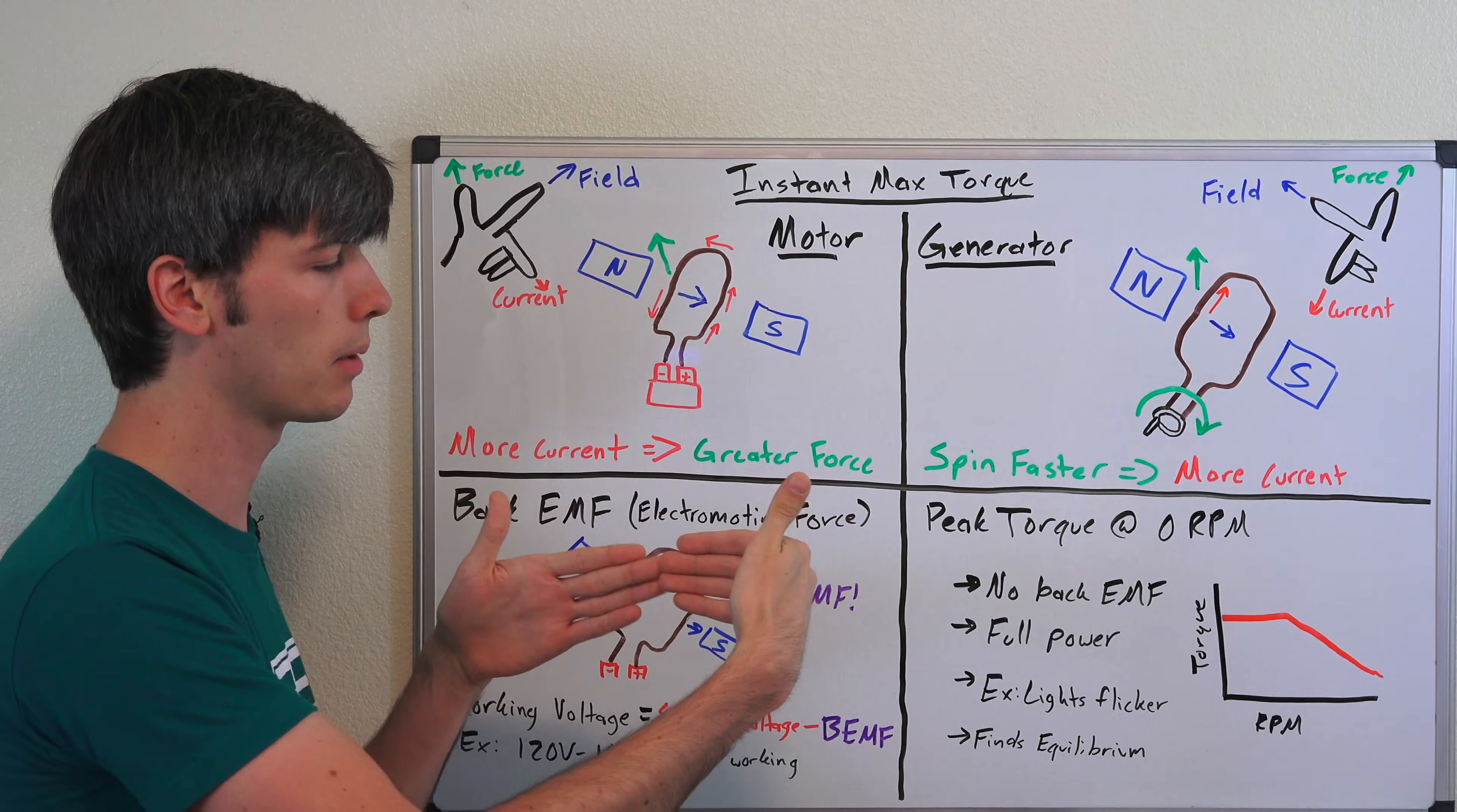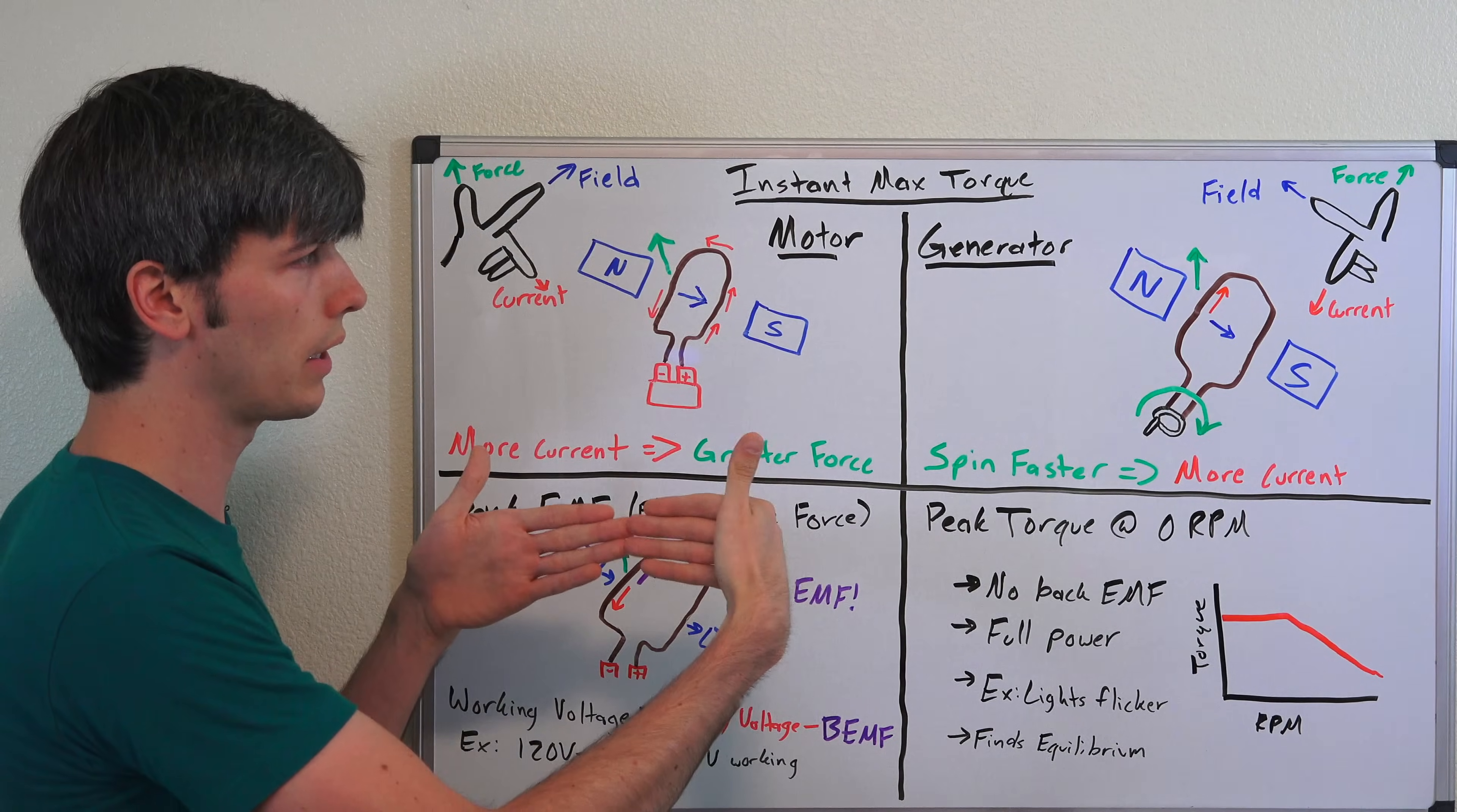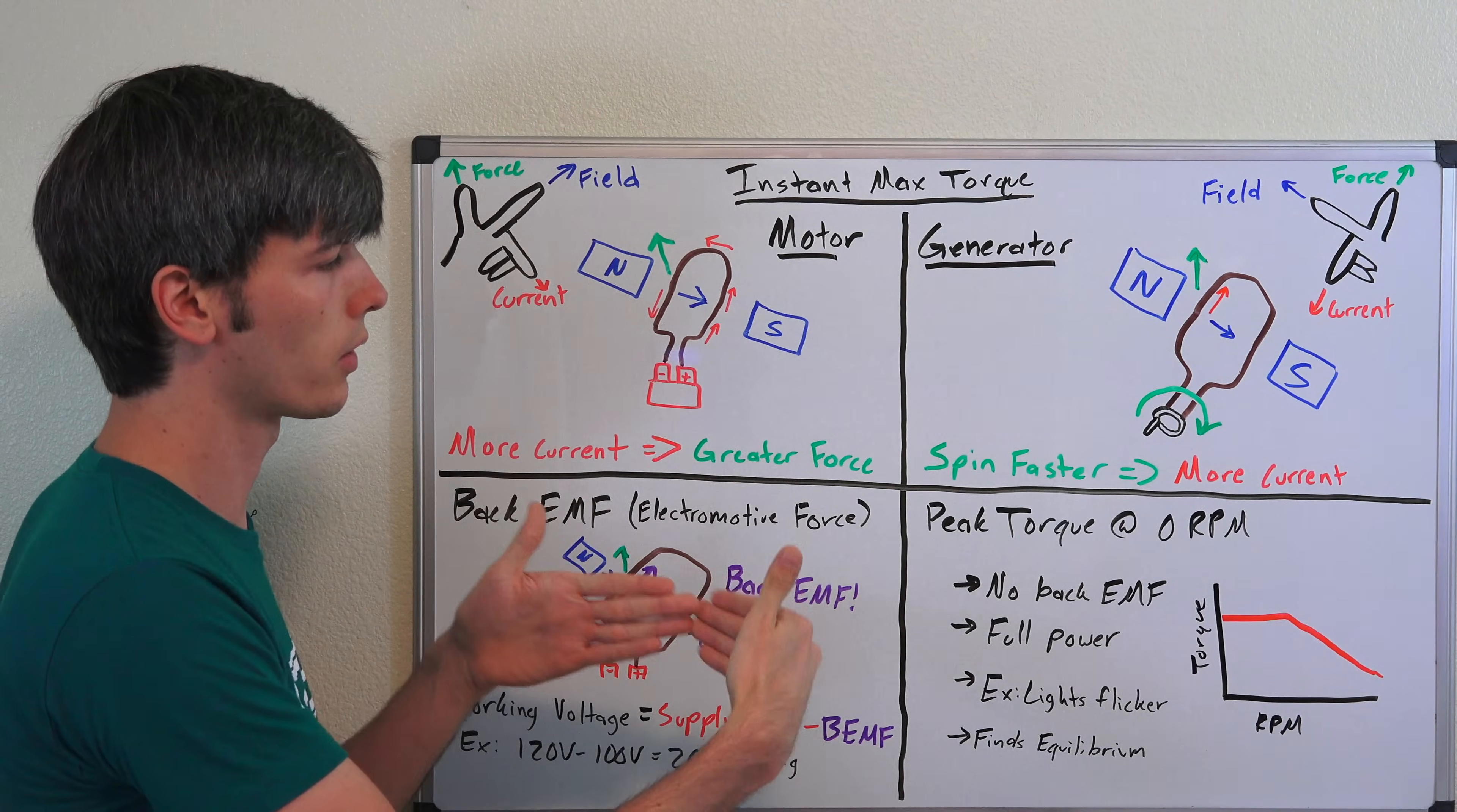So you're going to be at a certain speed. At that point your back EMF plus the resistances from driving, rolling resistance, things like that equal each other out and you're at a set speed. You supply more power, you increase your speed, but ultimately when you're at zero RPM you give it full power.